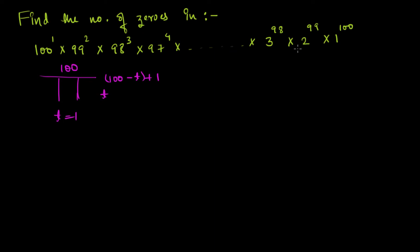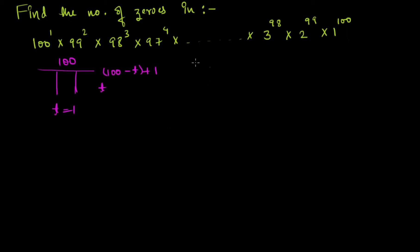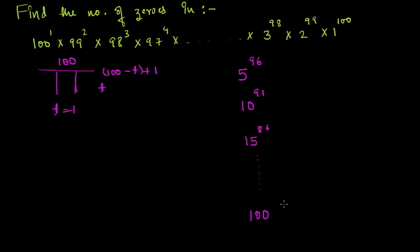Now we need to find the number of fives. Fives can only come from multiples of five. So starting from 5, it will have a power of 100 - 5 + 1 = 96. The next multiple, 10, will have a power of 100 - 10 + 1 = 91. Moving to 15, it has a power of 100 - 15 + 1 = 86. This continues up to 100, which has a power of 1.